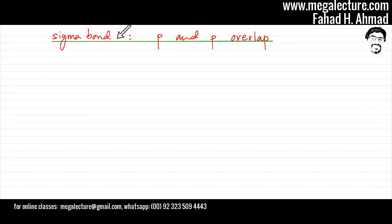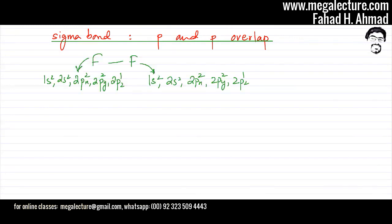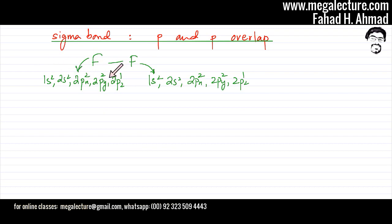The third type of sigma bond is a P+P overlap — an overlap between a P orbital from one atom and a P orbital from another atom. The example I'll use to show a P+P overlap is a fluorine molecule, F2. Fluorine's electronic configuration has nine electrons — 1s2, 2s2, 2px2, 2py2 — so all orbitals are full except for the last 2pz orbital, which needs one electron. The other fluorine atom has exactly the same configuration and also needs an electron in its 2pz.